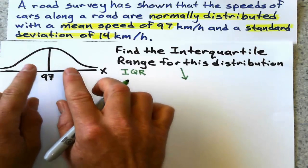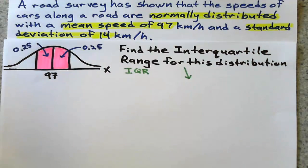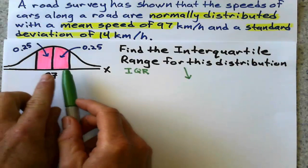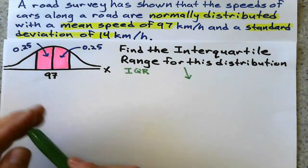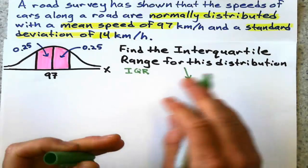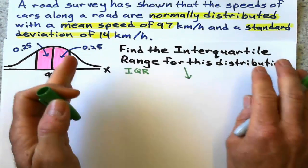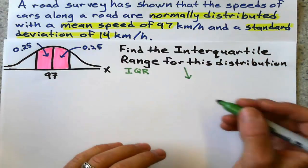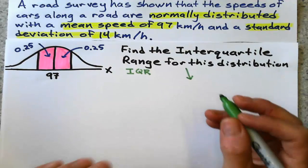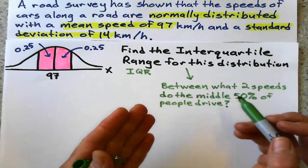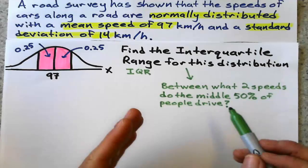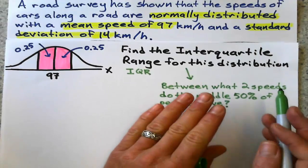If I were to draw that, the middle 50% would look something like 25% on both sides, symmetrical. What I'm really asking here is between what two speeds do the middle 50% of people drive.